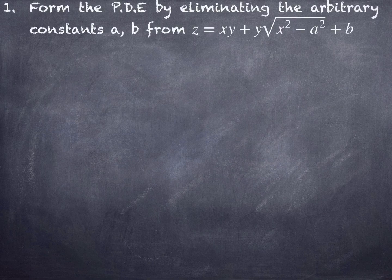Form the PDE by eliminating the arbitrary constants a and b from z equals xy plus y times the square root of x squared minus a squared, plus b.